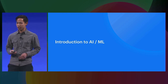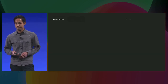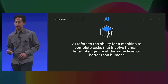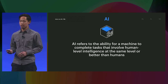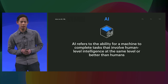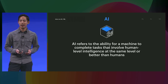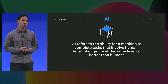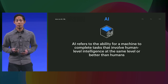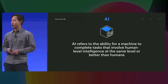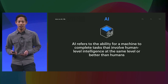Let's start with some terminology. AI, or artificial intelligence, refers to the ability for a machine to complete tasks that involve human-level intelligence as well as or better than a human can. When you think about popular culture and how we reference AI, that's usually referencing AGI, or artificial general intelligence, which refers to a machine that can perform any intellectual task as well as a human can — like your favorite droid from a galaxy far, far away.